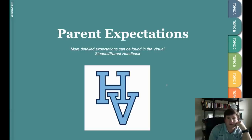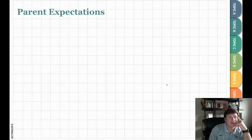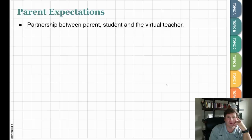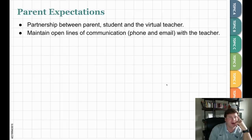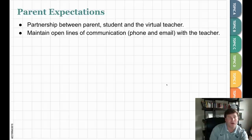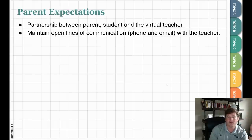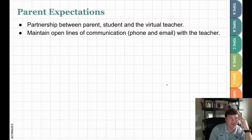Parent expectations — a more in-depth version is in the virtual handbook. We want a partnership between the parent, the student, and the virtual teacher. All three need to be working together. Maintain open lines of communication — phone and email — with the teacher. Teachers working at school can be contacted by phone as well as email. We have an expectation that teachers respond to parent communication quickly and appropriately. Your first point of contact when there's an issue is the teacher themselves. If that doesn't meet your needs, communicate with the academy administrator or the guidance counselor.